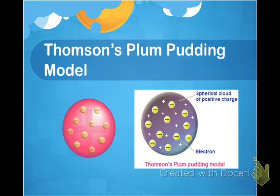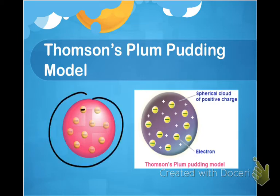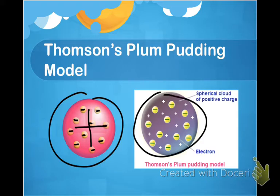The most important thing about Thomson is that he was the first scientist to propose that atoms were made up of even smaller particles. In Thomson's plum pudding model, the negatively charged electrons are embedded in a uniform positively charged base. He essentially thought that the entire atom was positively charged with negatively charged particles randomly floating within it — a spherical cloud of positive charge with electrons scattered throughout that positive base.